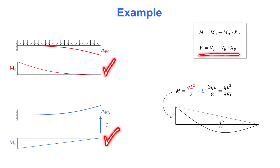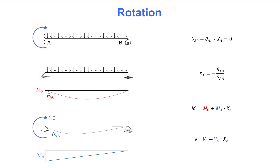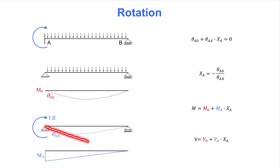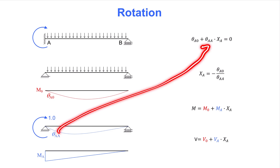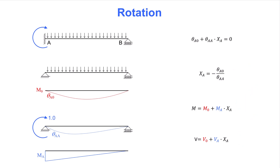The next slide reiterates that the bending moment value at point A could have been selected as the redundant instead. In that case, removing the capacity of that support to carry moment turns the beam into a simply supported statically determinate structure. The compatibility equation is now formulated in terms of the rotation at A — it is that rotation that represents the gap we must close with a moment. The final moment diagram will be the same as what was found earlier.